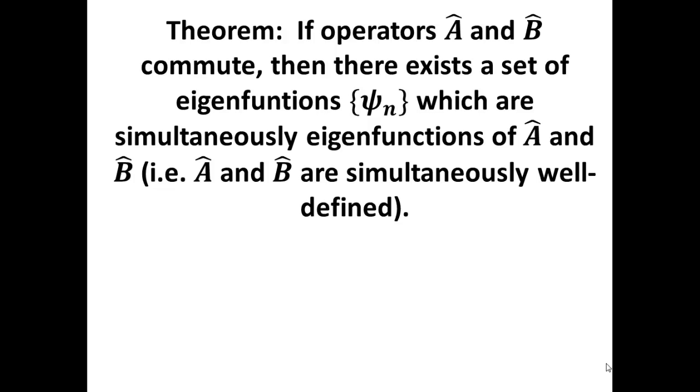What this means is that the A and B operators represent things that we are allowed to know simultaneously and precisely, in other words, not subject to the Heisenberg uncertainty principle limitations.